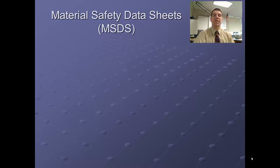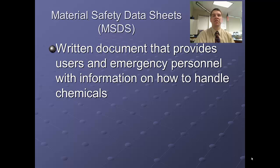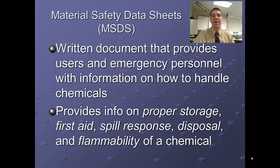MSDS stands for Material Safety Data Sheet. These are documents that every manufacturer of a chemical is required to furnish to retailers selling their product or to the direct end consumer. This document provides information about the chemical — its appearance, recognizable features, physical and chemical properties — as well as information about how to safely store it, handle it, and what to do in case of overexposure.